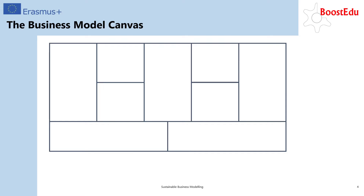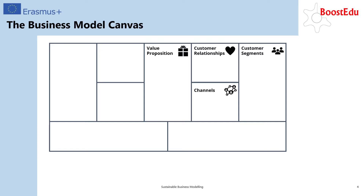As you can see, the business model canvas is structured around nine interconnected building blocks, each describing a vital part of your business model. The first one, customer segments, answers the question who are your customers. The value proposition represents your main selling point and why customers should choose you over your competition. The channels describe how you aim to communicate with your customers as well as how your products are delivered to them. The customer relationships describe the kind of relationship that you want to establish with your customers.